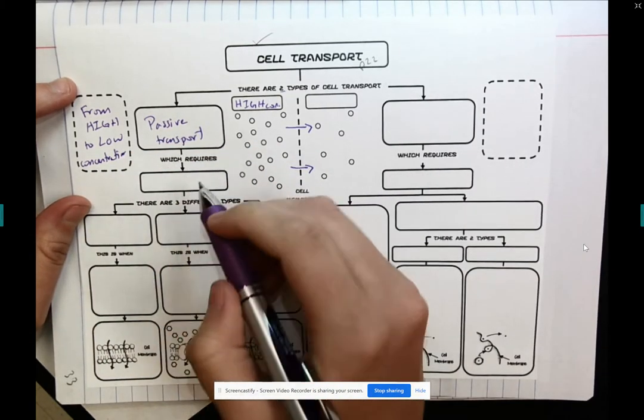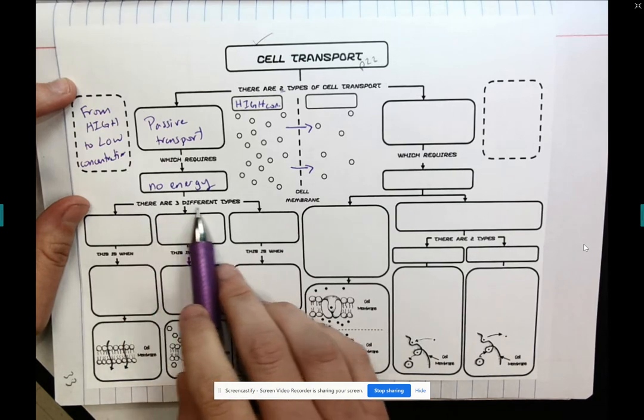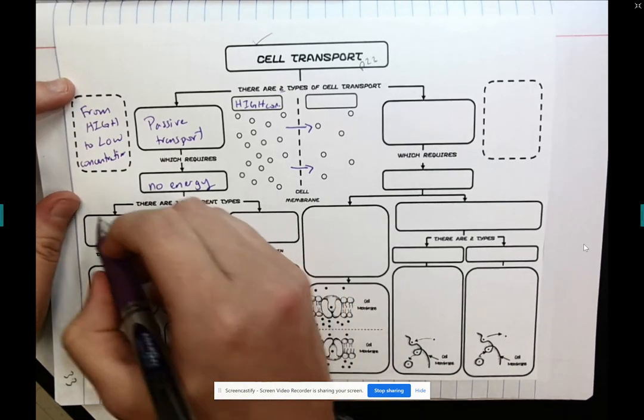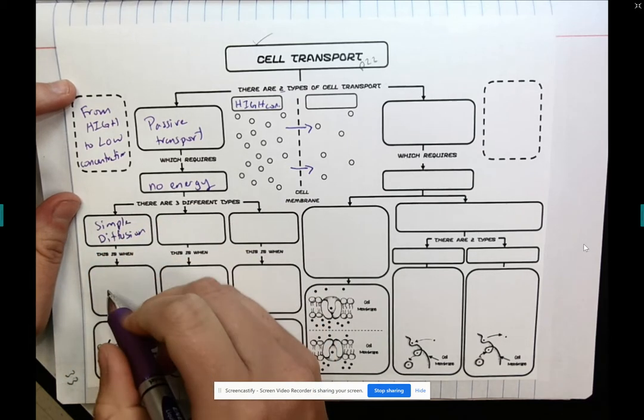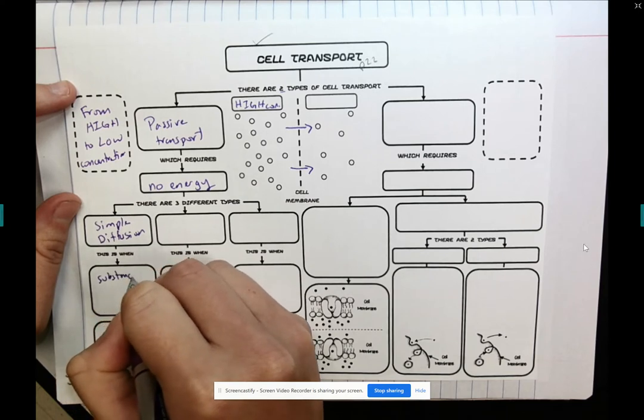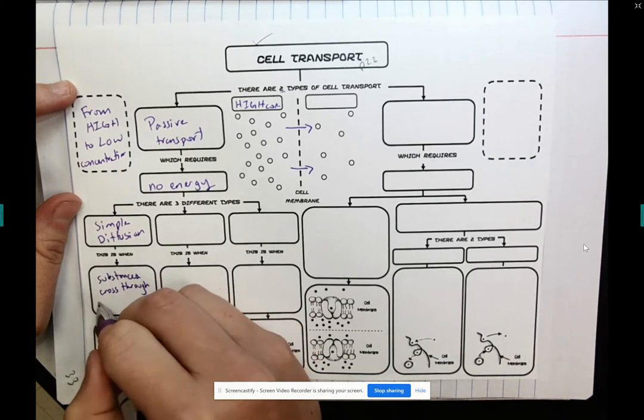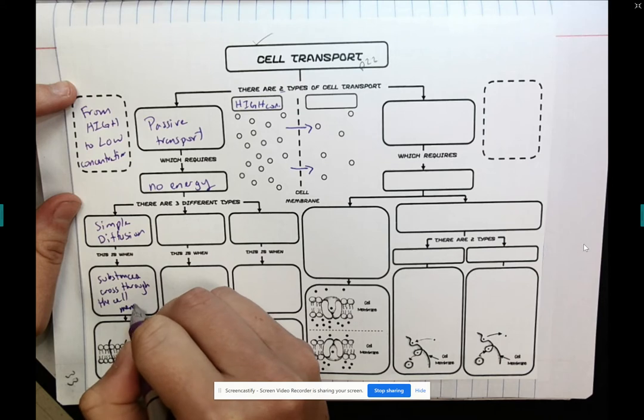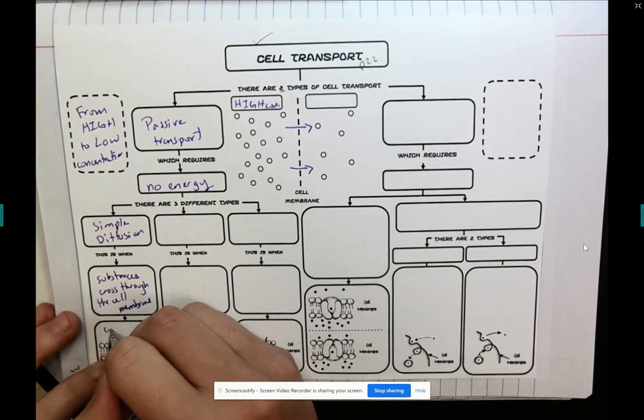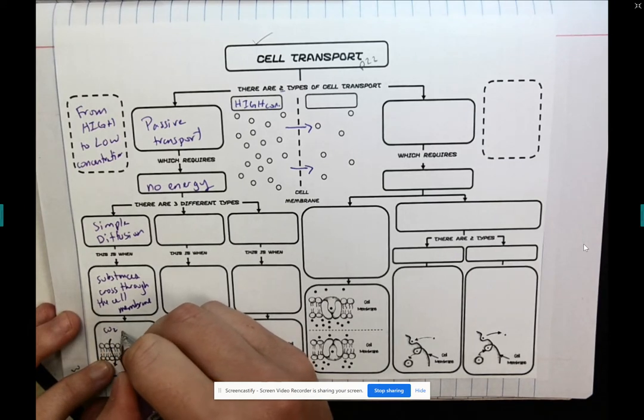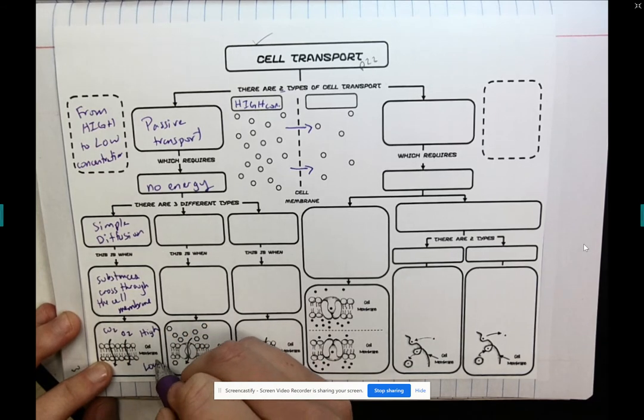Passive transport requires no energy - it is free. There are three different types of passive transport. There is simple diffusion. This is when substances cross through the cell membrane. So they just move straight through. This is things like carbon dioxide or oxygen. They're going to move from high to an area of low concentration.